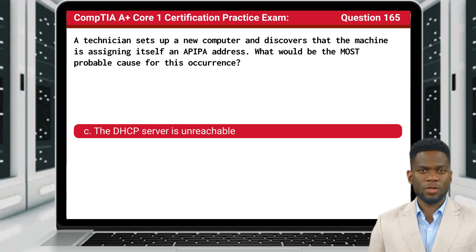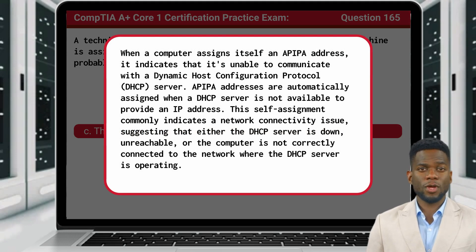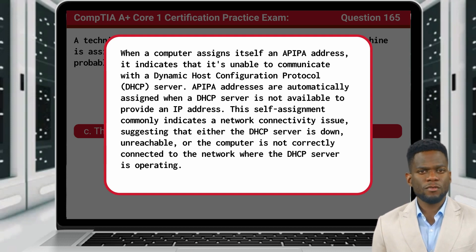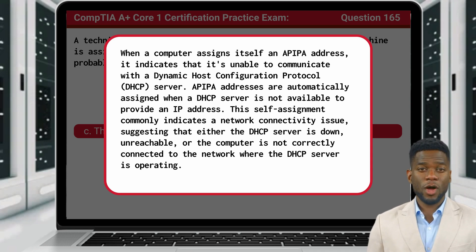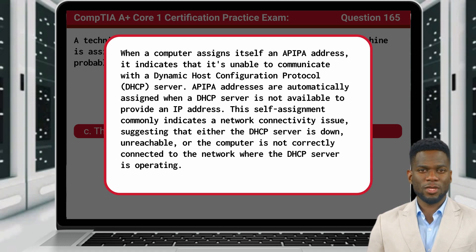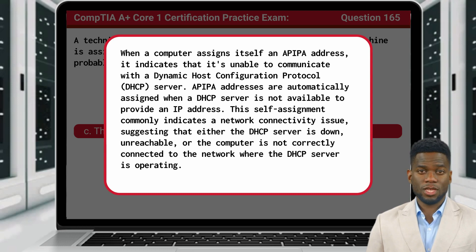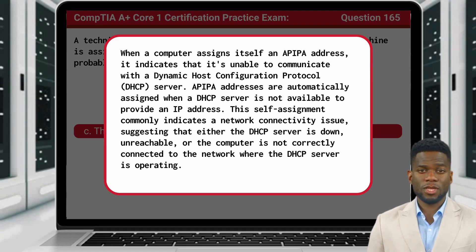The answer is C: the DHCP server is unreachable. When a computer assigns itself an APIPA address, it indicates that it's unable to communicate with a Dynamic Host Configuration Protocol, or DHCP, server. APIPA addresses are automatically assigned when a DHCP server is not available to provide an IP address. This self-assignment commonly indicates a network connectivity issue, suggesting that either the DHCP server is down, unreachable, or the computer is not correctly connected to the network where the DHCP server is operating.